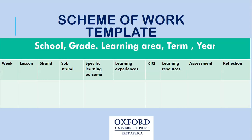So we have ten columns in the scheme of work for competency-based curriculum. But for 8-4-4, we've been having 12 columns. The learning experiences were split into teaching activities and learning activities. We did not have a key inquiry question. We also had evaluation, and learning resources were split into teaching aids and reference separately. The reflection was called the 'remark' at that time because we were only putting a remark.